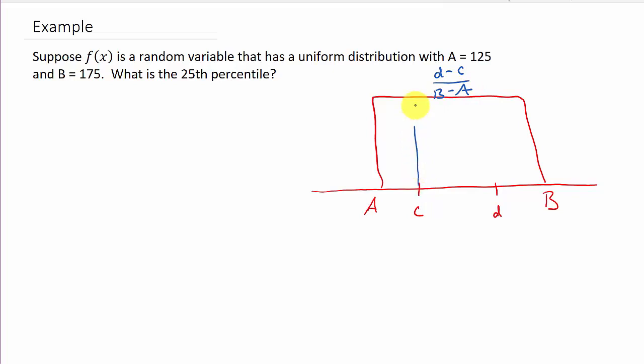So what we're looking for is the 25th percentile. We've got A equals 125 and B equals 175. The best thing to do is draw a picture, just sketch a picture out real quick.